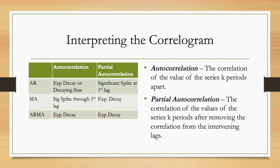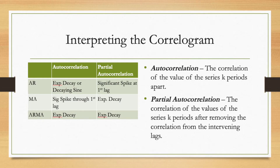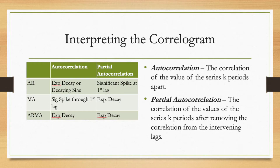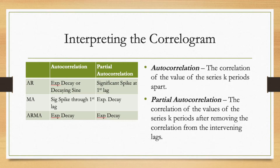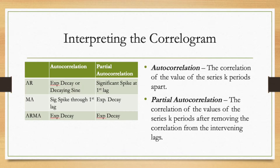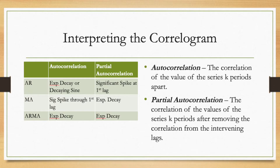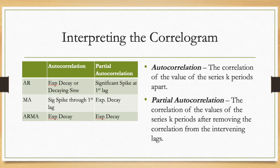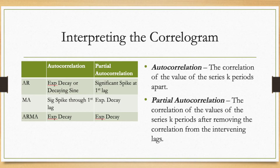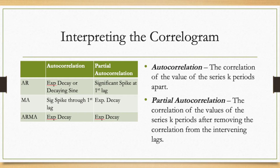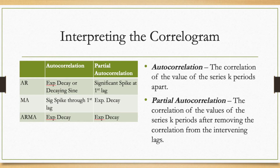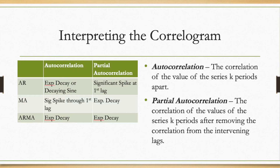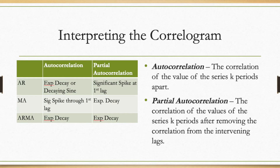Autocorrelation is the correlation of the value of the series k periods apart. Partial autocorrelation is the correlation of the values of the series k periods apart after removing the correlation from the intervening lags. If we observe exponential decay or a decaying sine wave pattern in the autocorrelation column, and a significant spike at the first lag in the partial autocorrelation column, the corrective action is AR — autoregressive — which is indeed what we observed and employed.